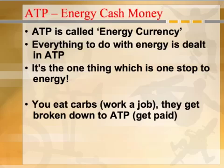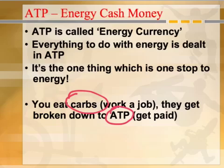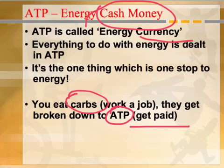ATP — we call that the energy currency, because everything to do with making energy or storing energy is all about ATPs. How many ATPs does it take to power something? That's because it's the one thing which is one stop away from either releasing energy or storing energy. So you have your really big molecules — you eat a plate of pasta, which is your carbs. They get broken down all the way to ATP. So it's a bit like you work a job and then you get your money — you get paid. So it's all about getting down to the micro molecule which is ATP, because this is how energy not only comes from the ATP, but we can also store it in ATP.